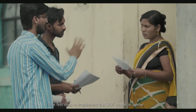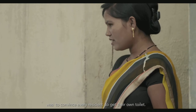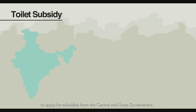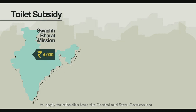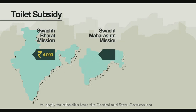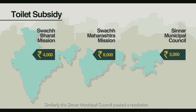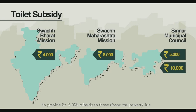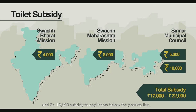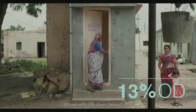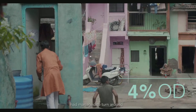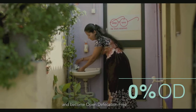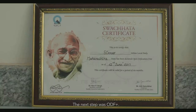The first step to implement the ODF model in Sindar was to convince every resident to get their own toilet. A town with 13% open defecation managed to turn around and become open defecation free. The next step was ODF plus.